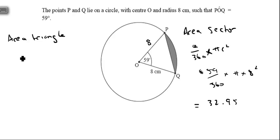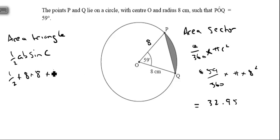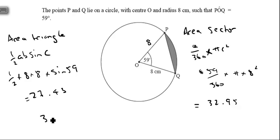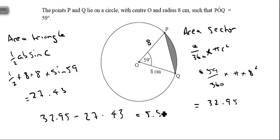Now for the area of the triangle, I'll use the formula ½ab sinC. Here a and b are both 8, so it's ½ × 8 × 8 × sin59°, which gives 27.43. Then the shaded area is the sector minus the triangle: 32.95 − 27.43 = 5.52 cm².